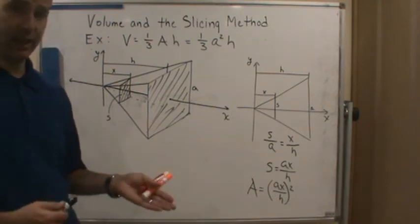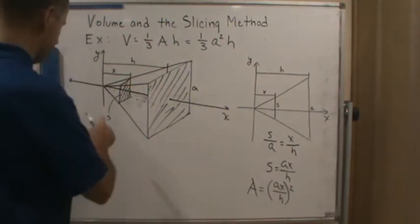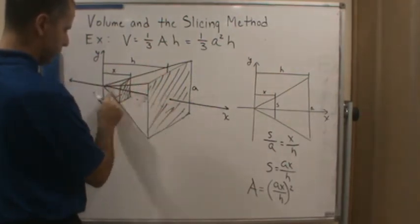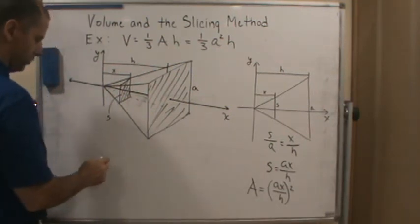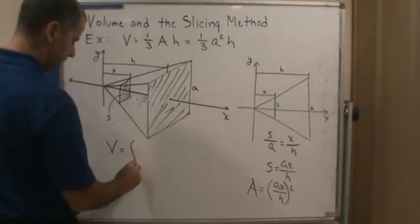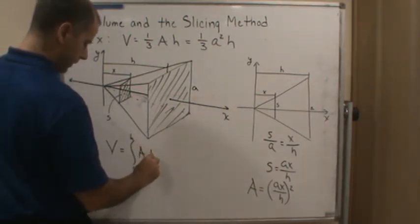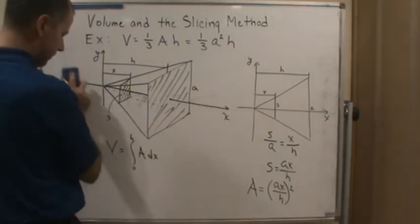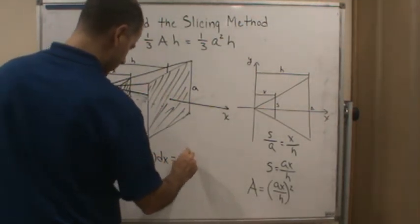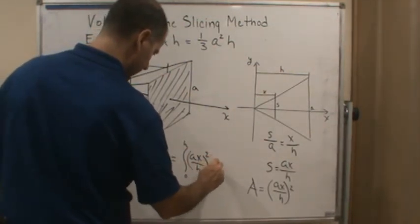So now what we're going to do is we're going to integrate our area formula over the interval from 0 all the way to h. Because that's the interval that we're adding up all of these areas. So the volume equals the integral from 0 to h of our area formula, a of x dx, which in this case is ax over h, quantity squared dx.